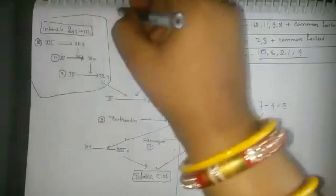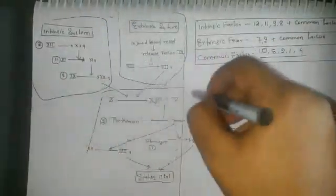This is the clotting process. This is the intrinsic pathway and this is the extrinsic pathway. This is the common pathway. Clear.